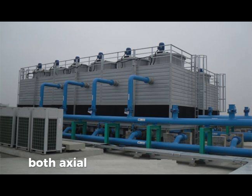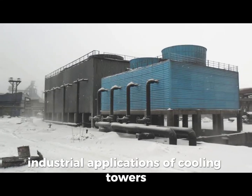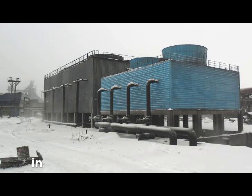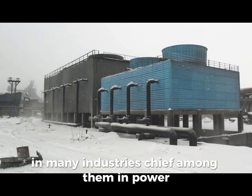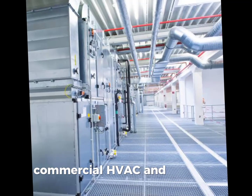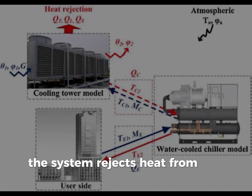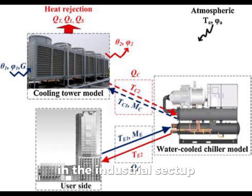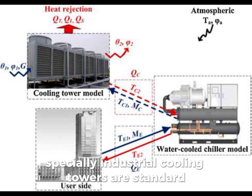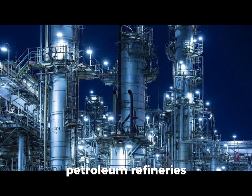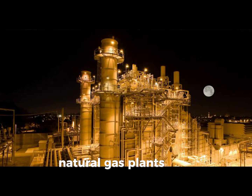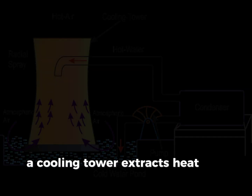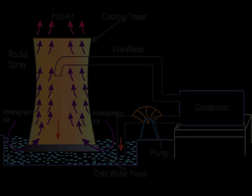Furthermore, induced draft towers work using axial fans, while in force draft towers both axial and radial fans can be used. A cooling tower system is conventional in many industries, chief among them being power, commercial HVAC, and industrial. The system rejects heat from machinery and heated process material. In industrial setups, cooling towers are standard in food processing plants, petroleum refineries, natural gas plants, and petrochemical plants.